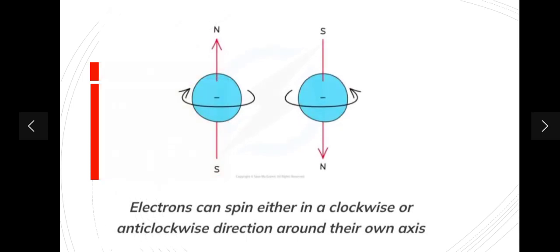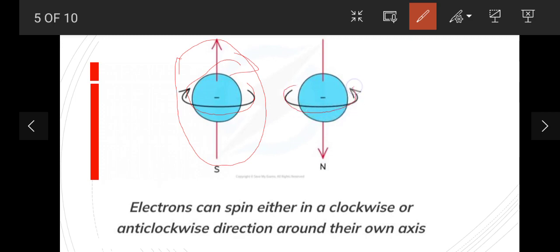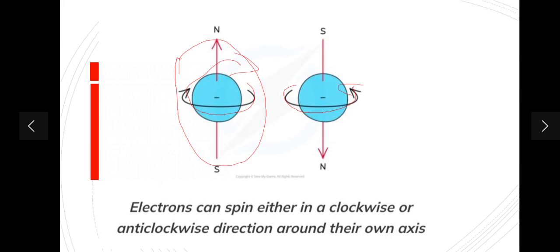Here you can see the diagram. In the first case, you can see the electron is rotating in a clockwise direction, and it will only rotate clockwise. Here you can see the second electron is rotating anti-clockwise — here we have the south and here we have the north. You should be aware that electrons rotate around their own axis in either a clockwise or anti-clockwise direction.